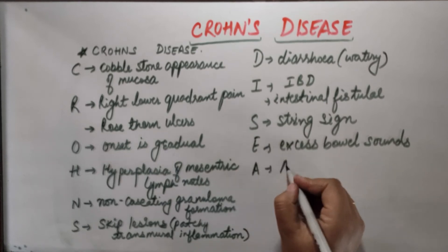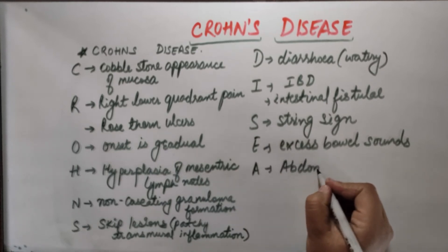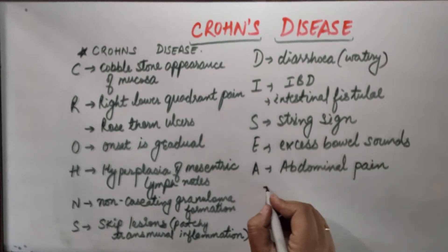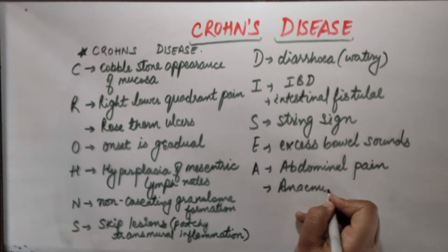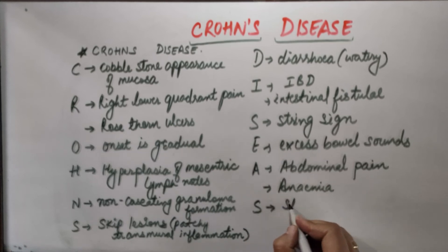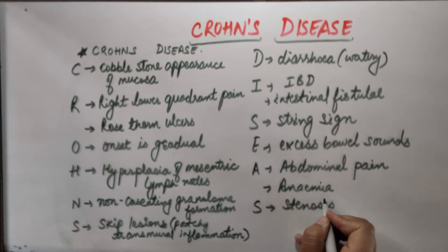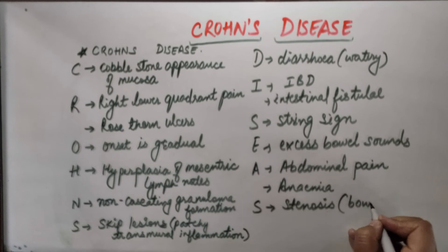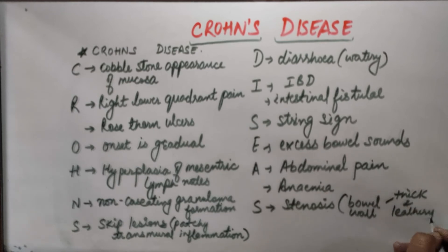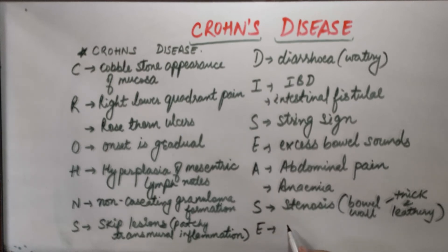A is abdominal pain, which is colicky in nature. A also stands for anemia. S is stenosis, where the bowel wall becomes thick and leathery and the lumen gets narrowed.